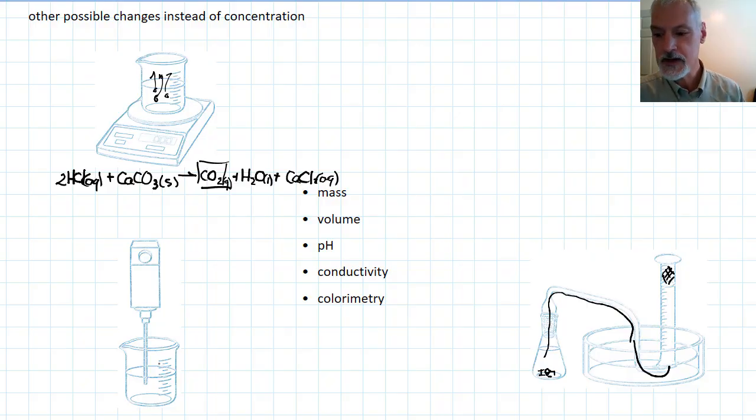One could also measure changes in pH. pH gives you a measure in particular of the hydrogen ion concentration. So we can measure changes in the hydrogen ion concentration with respect to time. Other methods could involve changes in conductivity. That method works particularly well when you have changes in the number of ions on both sides of the equation. So perhaps one side that has no ions and another side that has lots of ions. And the last method you could perhaps use is colorimetry where you get a particular color change in a substance and you can measure that with a spectrometer.